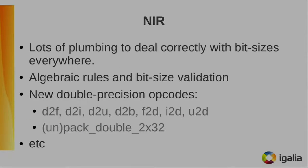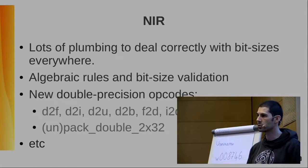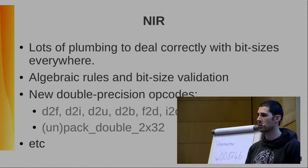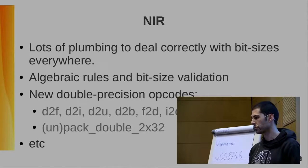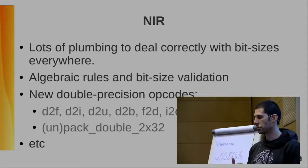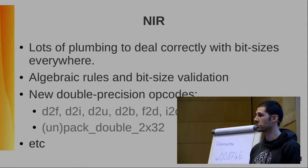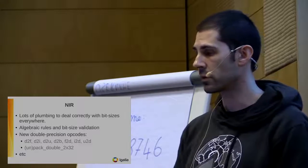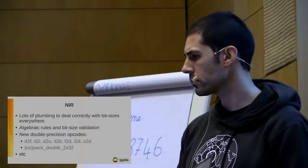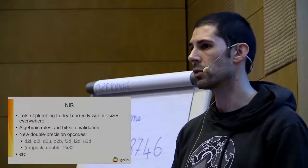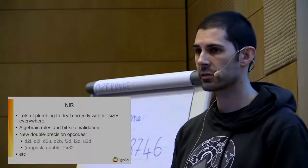As a consequence of that change, there was a lot of work to ensure every path in NIR handled bit sizes correctly and delivered correct bit sizes to the Intel driver. There was also work to declare bit sizes in algebraic expressions and add validation for consistent, unambiguous bit sizes in these rules. And we have new opcodes for conversions from/to 32-bits, packing and unpacking functions, and things like that.